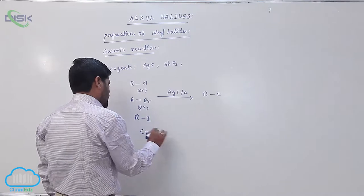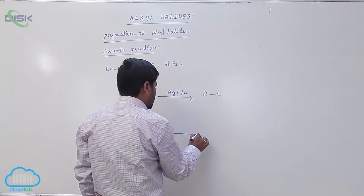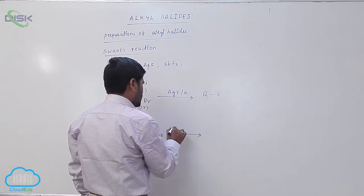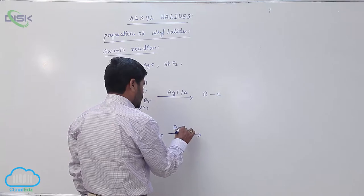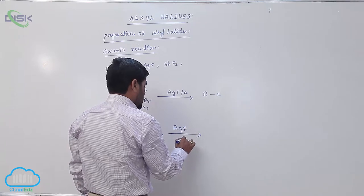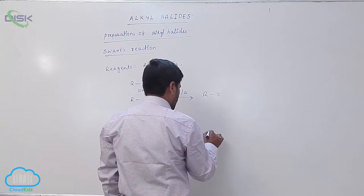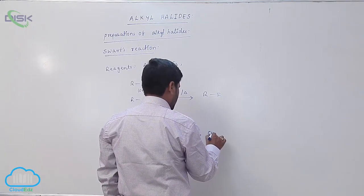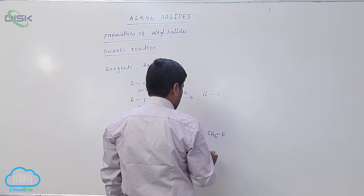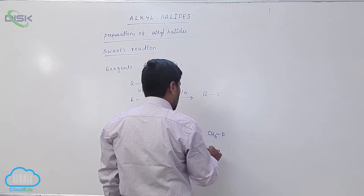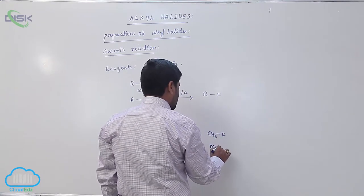For example, when methyl bromide reacts with silver fluoride, it forms fluoromethane, or methyl fluoride.